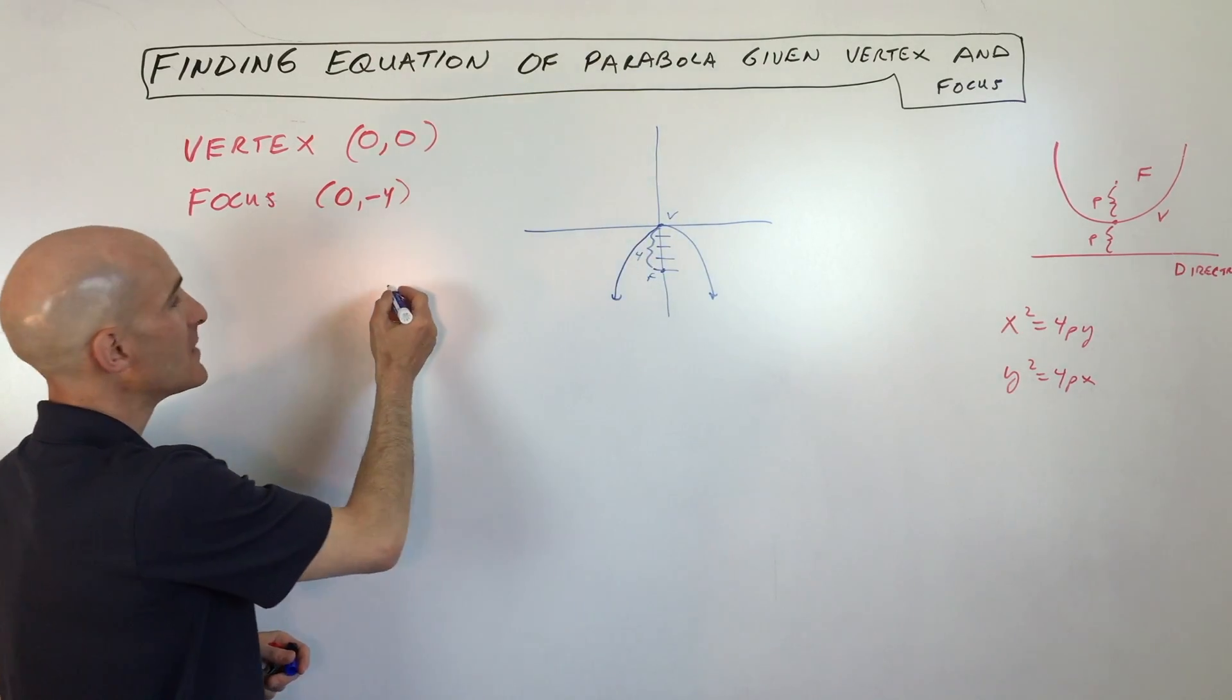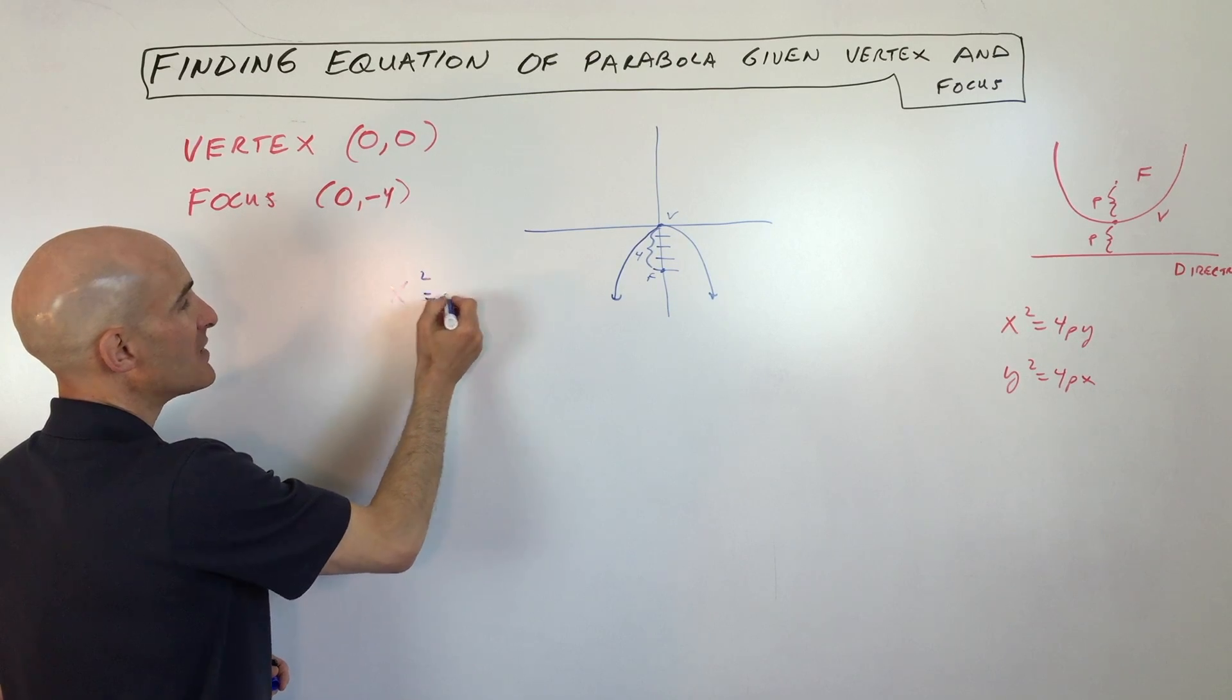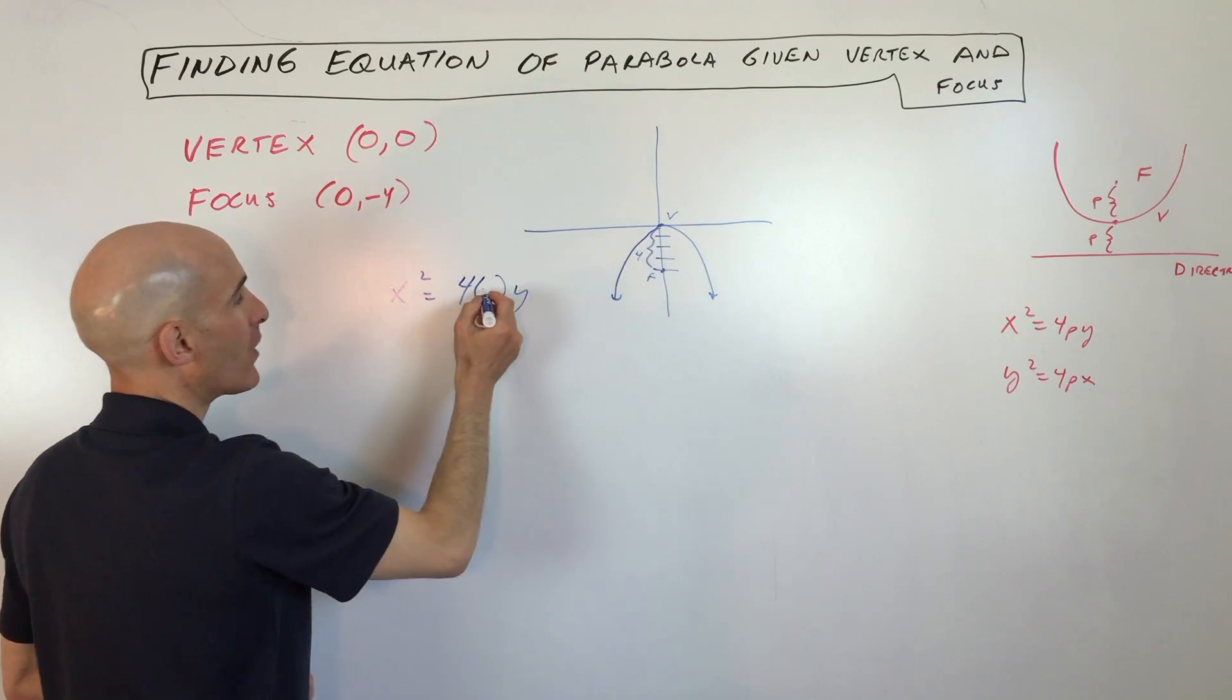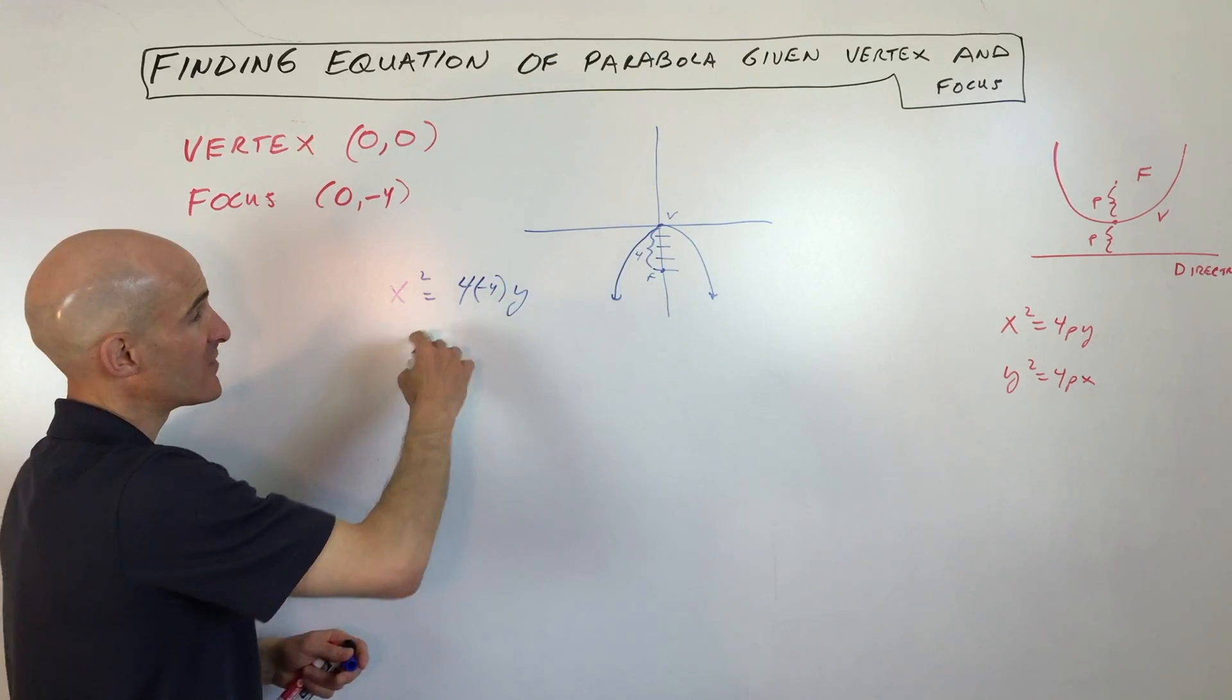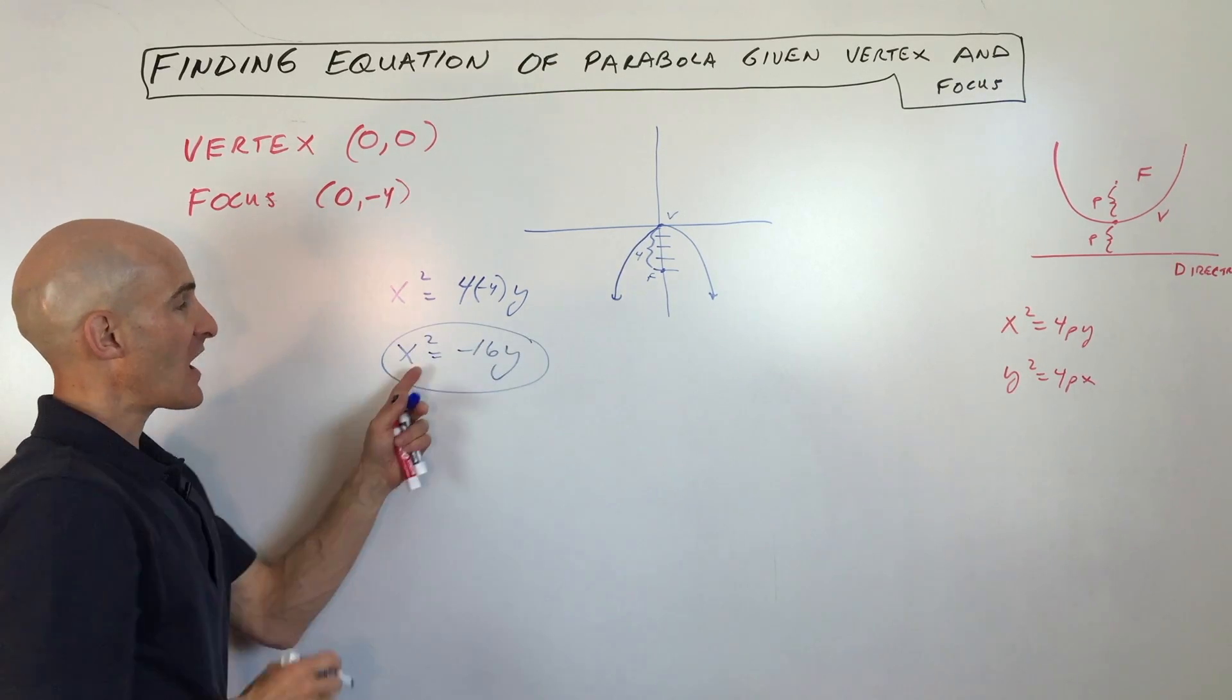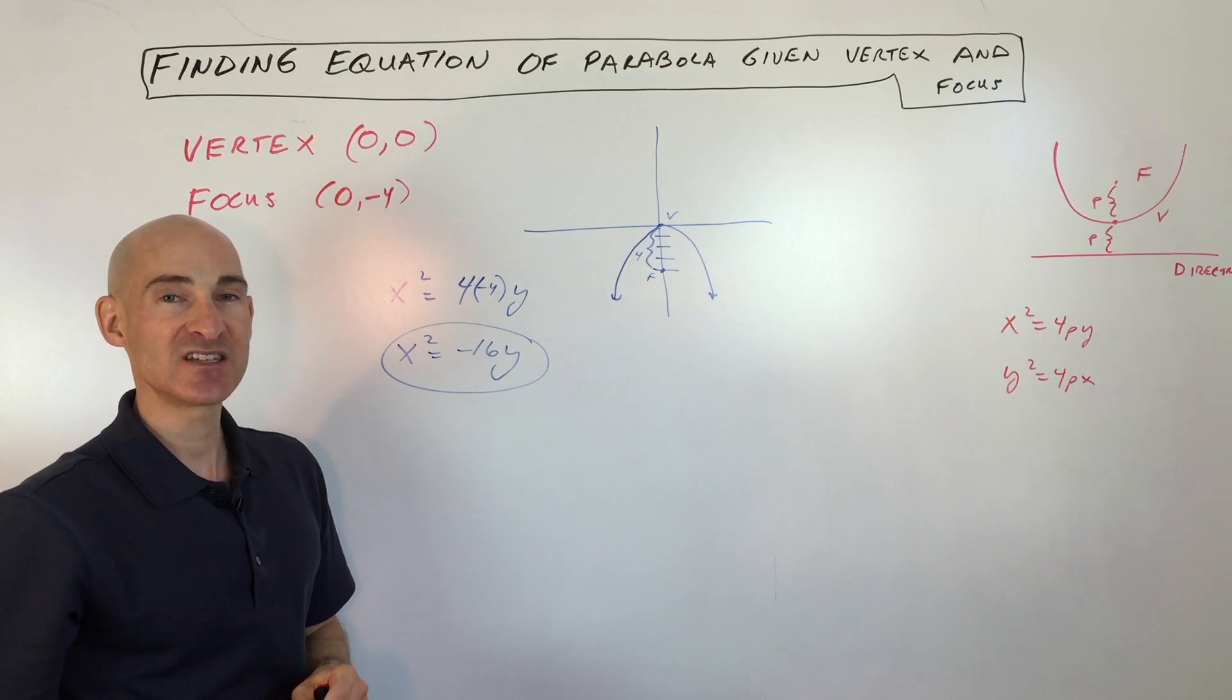So we know that it's going to be x squared equals 4py, and the p distance you can see is 4. I'm going to make that a negative 4 so that this is negative. It's going to be opening downward. So our equation is x squared equals negative 16y.